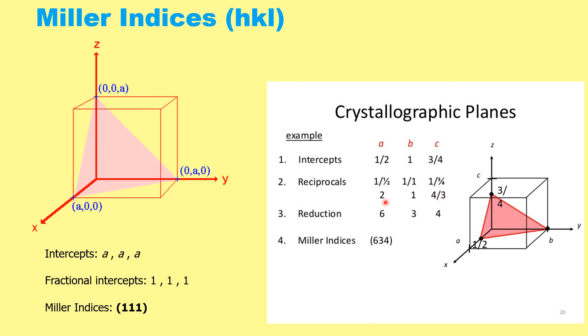If we want to make it integer, multiply by 3, so it will be 6, 3, 4. So this shaded plane is 634.